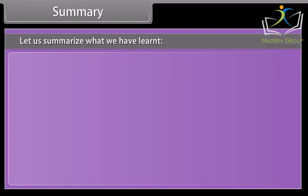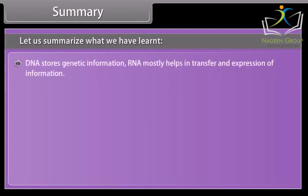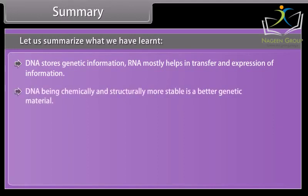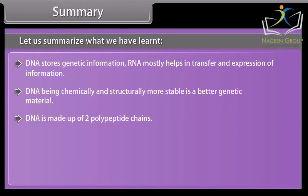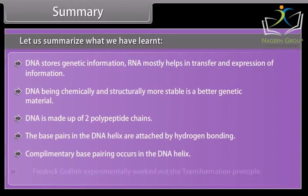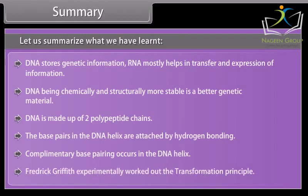Let us summarize what we have learned. DNA stores genetic information. RNA mostly helps in the transfer and expression of information. DNA, being chemically and structurally more stable, is a better genetic material. DNA is made up of two polynucleotide chains. The base pairs in the DNA helix are attached by hydrogen bonding. Complementary base pairing occurs in the DNA helix. Frederick Griffith experimentally worked out the transformation principle.